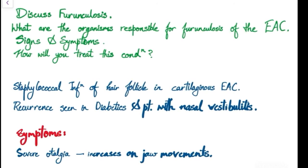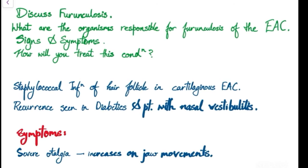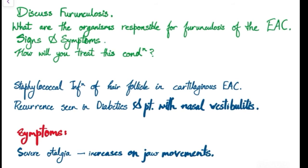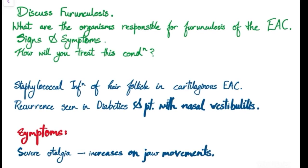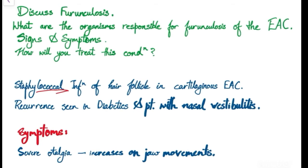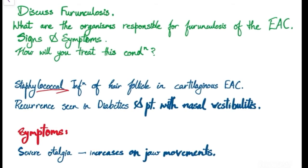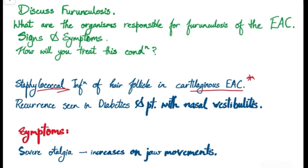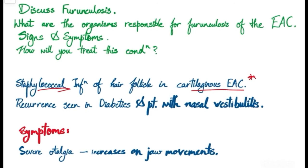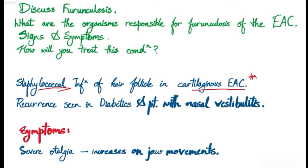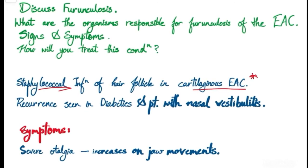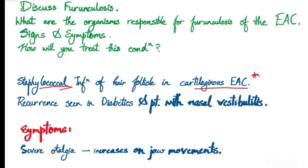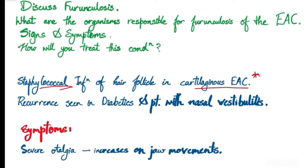The definition is: furunculosis is a staphylococcal infection of the hair follicle, caused by Staphylococcus aureus, in the cartilaginous external auditory canal (EAC). This is a very important point — furunculosis only occurs in the cartilaginous EAC because only that part has hair follicles and is covered by skin.